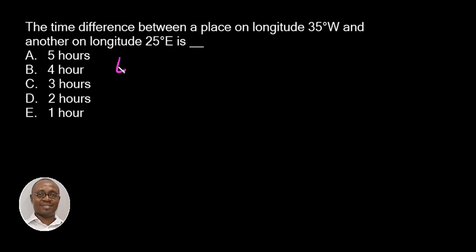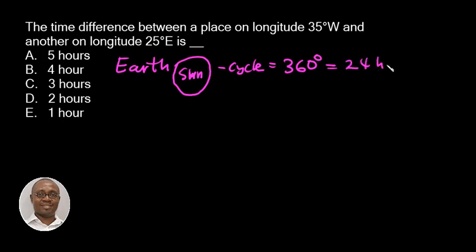Let us understand some basic facts. When the Earth goes round the sun in a complete cycle, it has made 360 degrees at 24 hours. That makes a complete rotation round the sun.